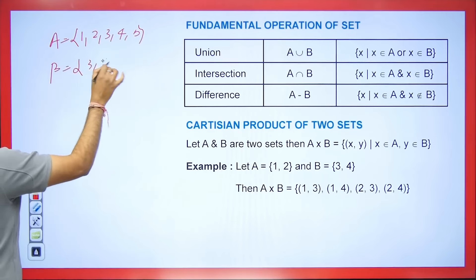Union is defined as: A ∪ B = {x : x ∈ A or x ∈ B}. Whatever element we have, it should either be in A or in B — if it appears in both, we write it only once. Now intersection means the common elements in both sets. The common elements of A and B here are 3 and 4. Intersection is: A ∩ B = {x : x ∈ A and x ∈ B} — x should be in both A and B. So {3, 4} will come.